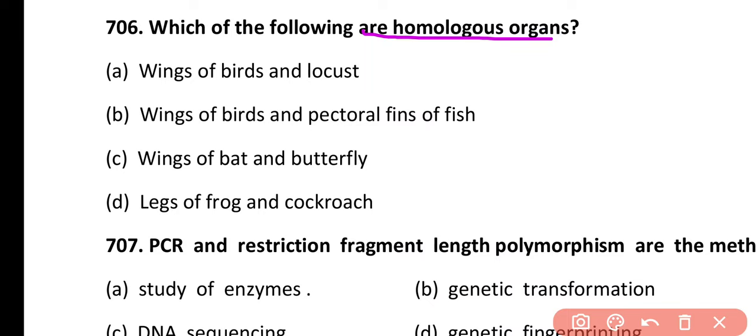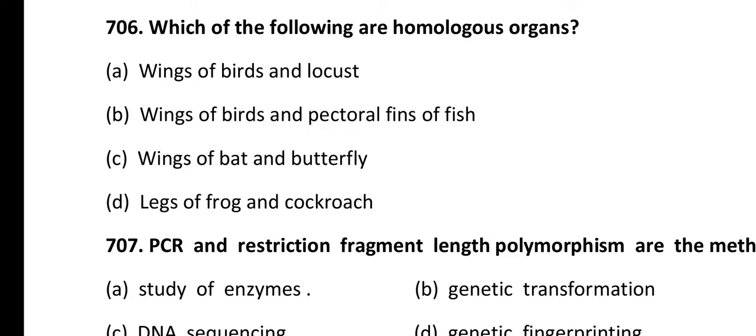Question 706. Which of the following are homologous organs? Wings of birds and locusts, wings of bird and pectoral fins of fish, wings of bat and butterfly, or legs of frog and cockroach. Correct answer is option B. Wings of birds and pectoral fins of fishes are examples of homologous organs.